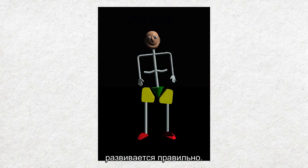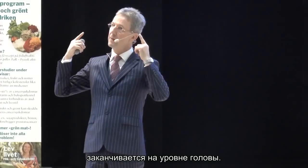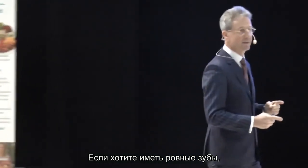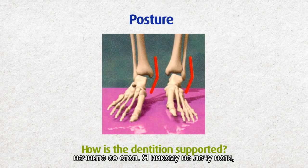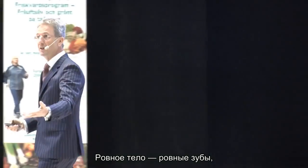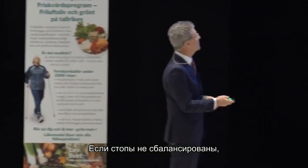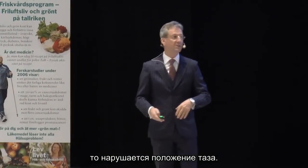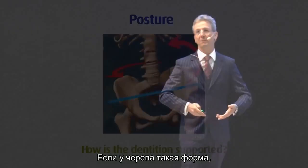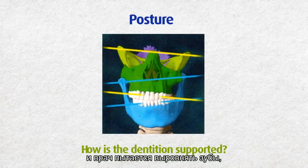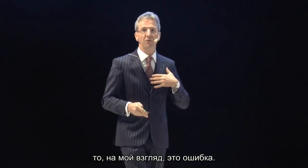One of the problems with posture is that it starts in the feet and goes to the head. So if you want to get straight teeth, we start by looking at the feet. What we say is: straight body, straight teeth; crooked body, crooked teeth. If the feet aren't well balanced, then the pelvis will be rotated. If the pelvis is rotated, the cranium will be out of balance. And if you've got a distorted cranium, trying to get the teeth straight while ignoring the structures of the bones of the cranium is, in my view, a mistake.